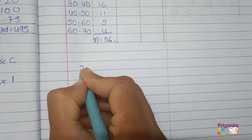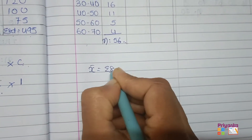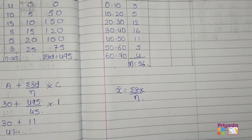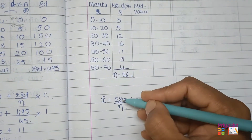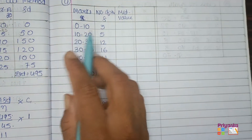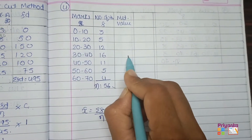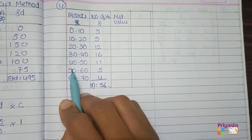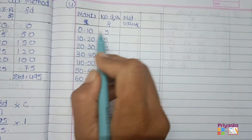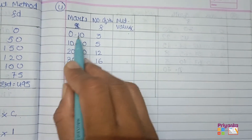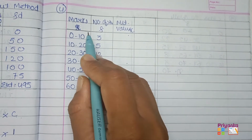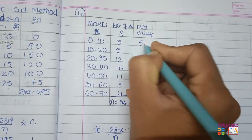Remember the formula for the direct method: mean = σfx ÷ n. For this we need frequency multiplied by x. But here the class is given as 0 to 10, 10 to 20, etc. So first find out the mid value, which will be denoted as x. To find the mid value, just add the class boundaries and divide by 2. So 0 + 10 ÷ 2 = 10 ÷ 2 = 5.